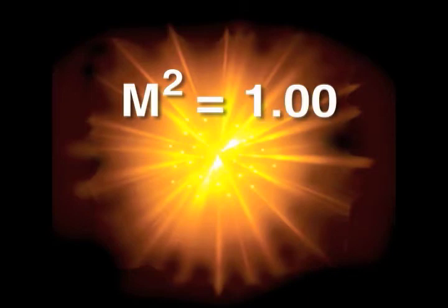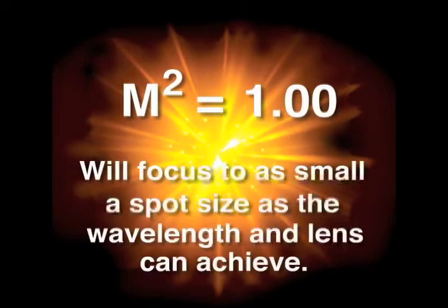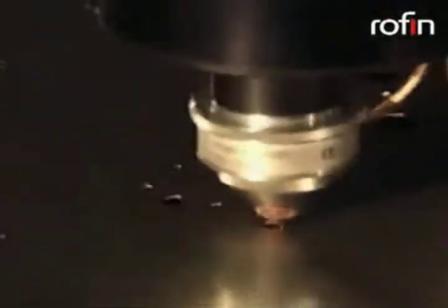In simplified mathematical terms, a beam with an m squared value of 1 will focus to as small a spot size as the wavelength and a distortion free lens can achieve. Lasers designed and manufactured for applications that are frequently used for drilling, cutting, and welding are often designed and tuned to have low m squared values. And today, most manufacturers specify the best possible m squared value of their laser.